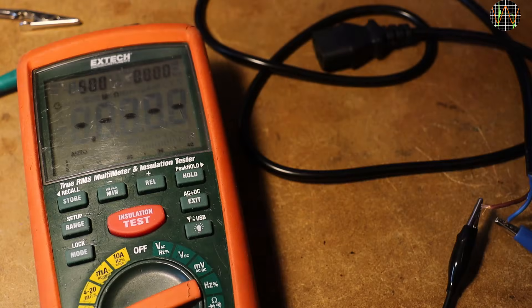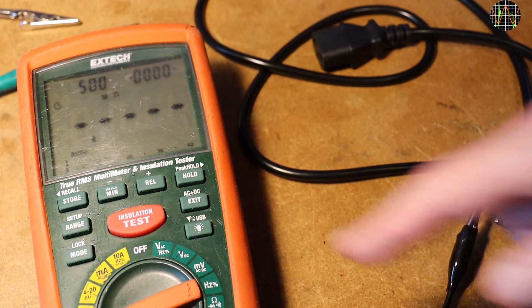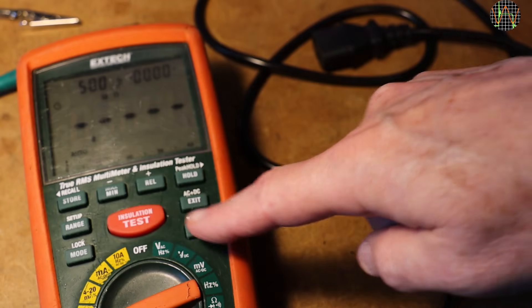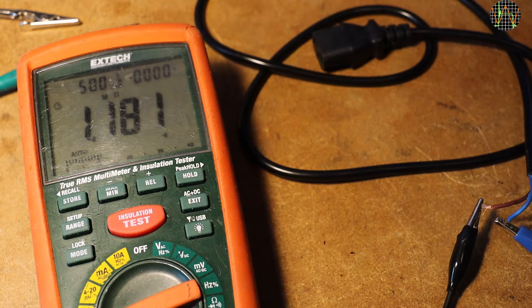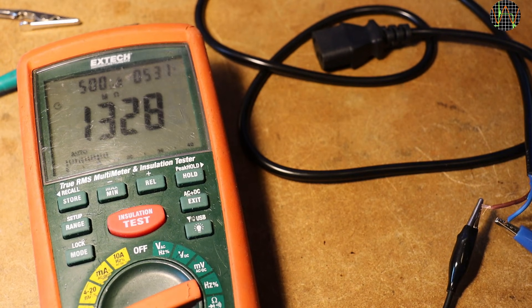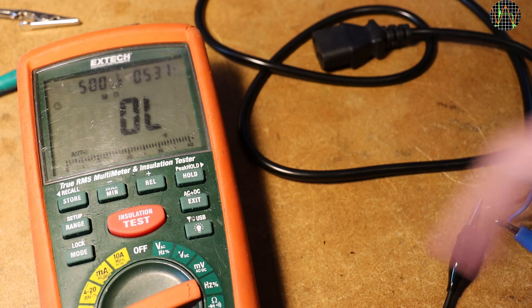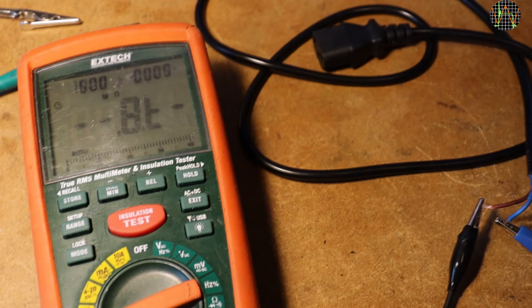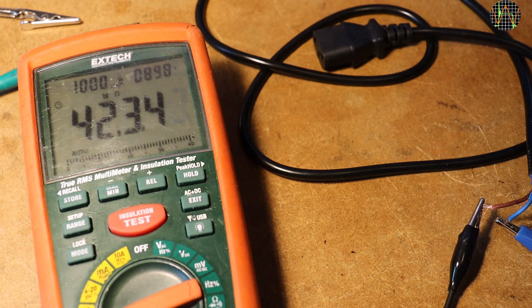I should have tested this before partially melting it, but anyway, let's see if the two wires could still handle high voltage. Starting with 500V. If you remember, the cable marking seemed to indicate that it was rated for 300-500V. There is no problem with 500V, which I find amazing given the state of the melted insulation.